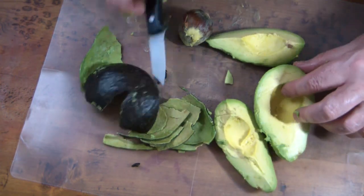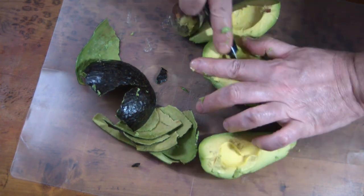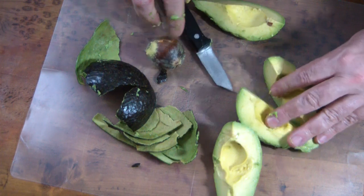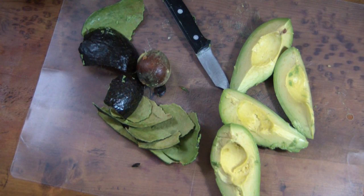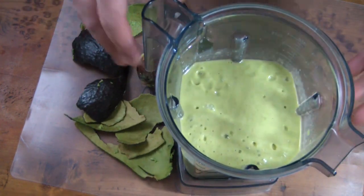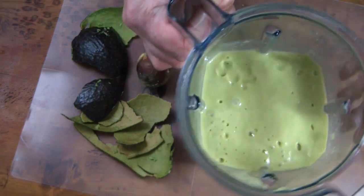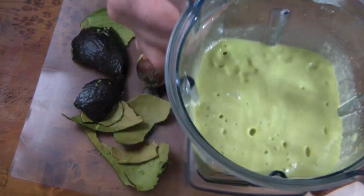So I cut the avocado and then mixed it with the aloe vera gel and the cucumber juice. Here it is all blended together. It smelled really good by the way - I was tempted just to drink it, but it was really thick as you can see.